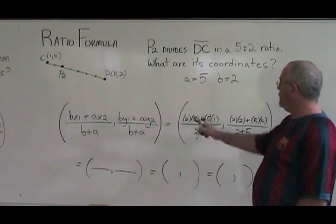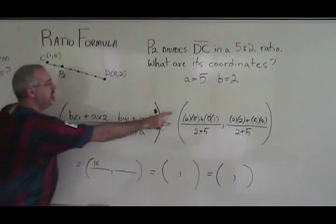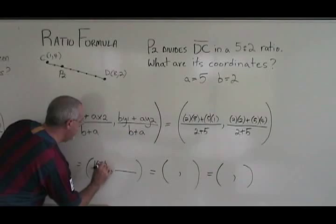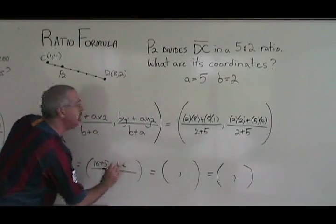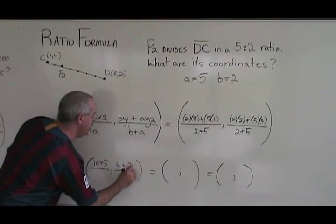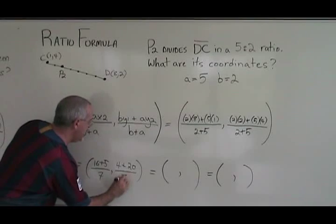Simplifying this, two times eight is sixteen plus five times one is five. Two times two is four, plus five times four is twenty. The b plus a on the bottom, two plus five is seven in both cases.